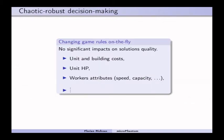A third improvement, and it's also a major one, concern chaotic robust decision making. For me, a chaotic environment is a game where game rules can change, either on the flight, during the game, in game, or between two games.